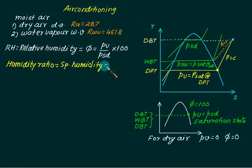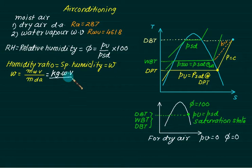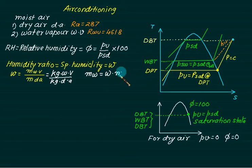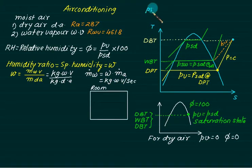The next term is humidity ratio or specific humidity, represented by lowercase w, defined as the mass of water vapor divided by the mass of dry air. This is not dimensionless — its unit is kg of water vapor per kg of dry air. Multiplying specific humidity by the mass of air gives kg of water vapor. If you know the mass flow rate of air, you can find the mass flow rate of water vapor in kg/s.